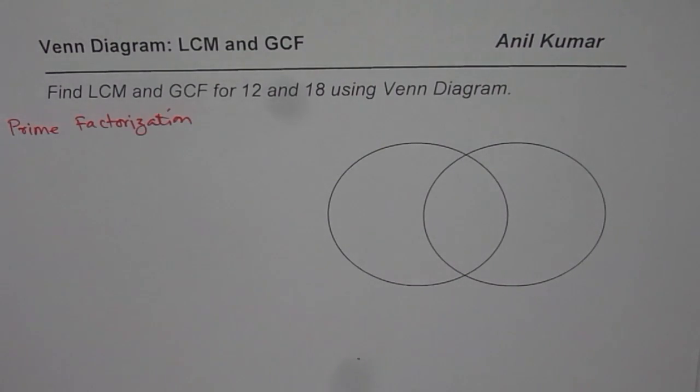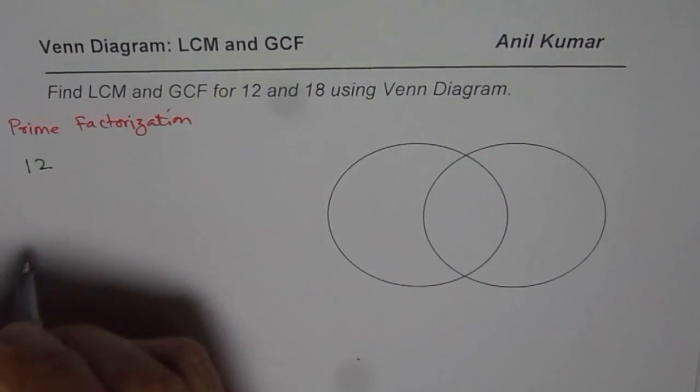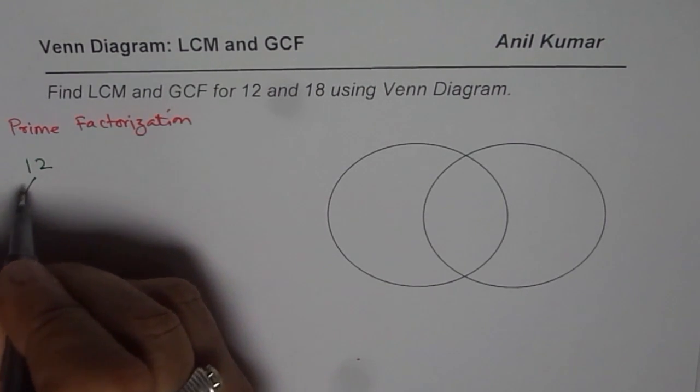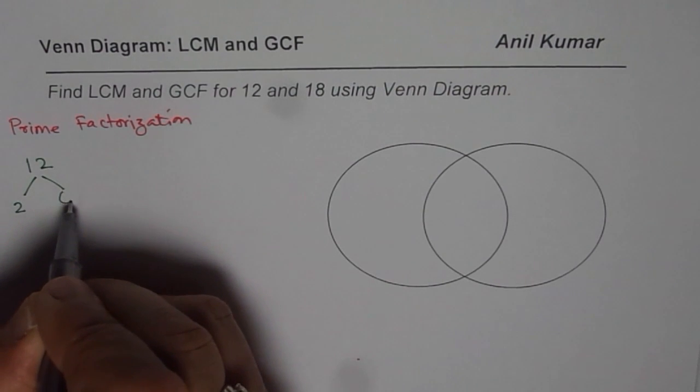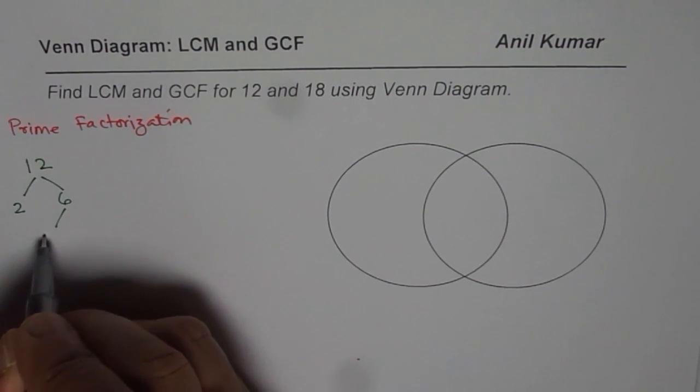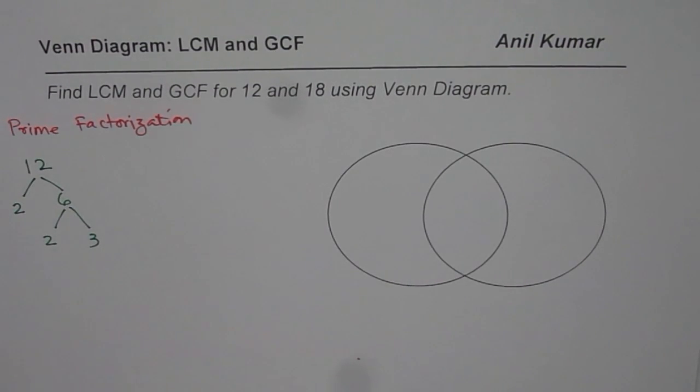So let us do prime factorization for both the numbers. The numbers are 12 and 18 so let us begin by 12. Prime factorization is divided by some prime number, let us say 2. 2 goes 6 times. But 6 is not prime, it can again be divided. 2 times 3, so we get now all prime numbers.